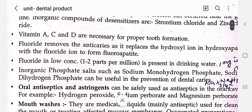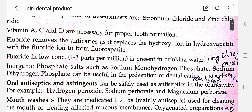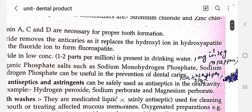Fluoride in low concentration — 1 to 2 parts per million (PPM) — is present in drinking water. PPM is nothing but parts per million; 1 milligram per kilogram is 1 PPM. Usually we need 1 or 2 PPM of fluoride in drinking water.